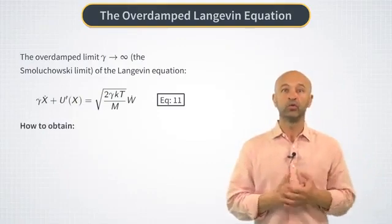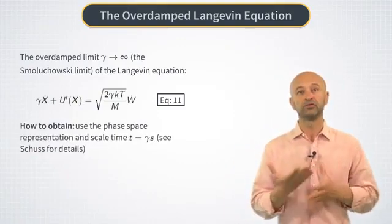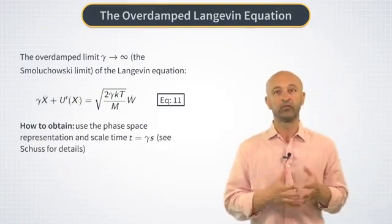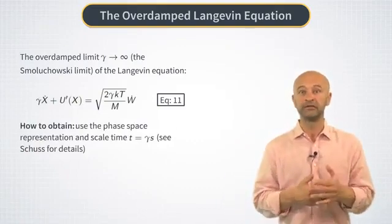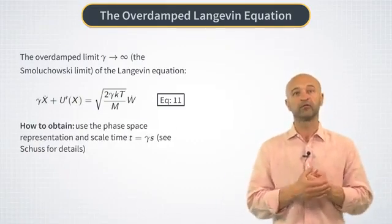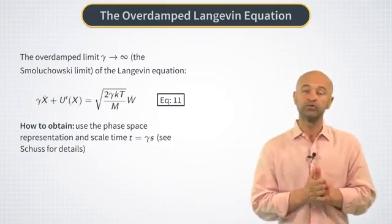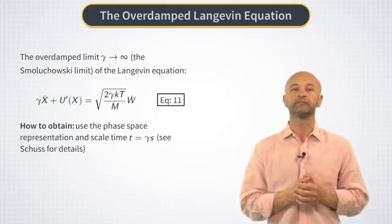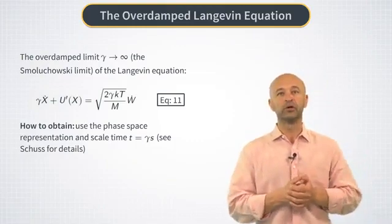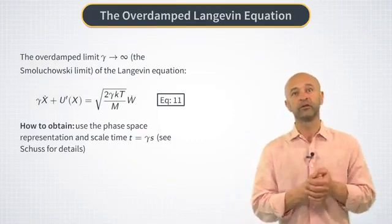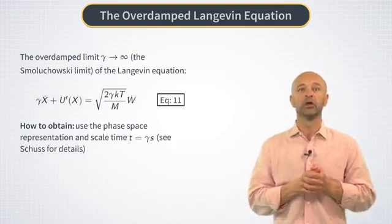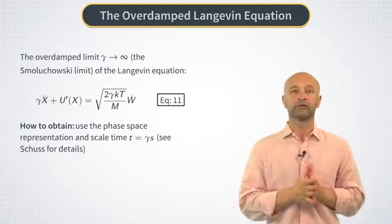There is a way to actually derive this result. It uses the phase space form that I showed you above, plus re-scaling of time by the factor of gamma. You can find the derivation in the book of Schuss that I already mentioned. Now, this equation is only of first order in time derivative, unlike the original Langevin equation that was of the second order in time.